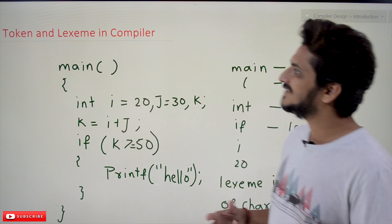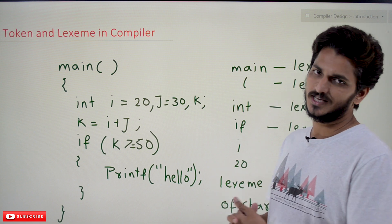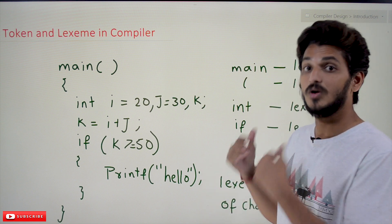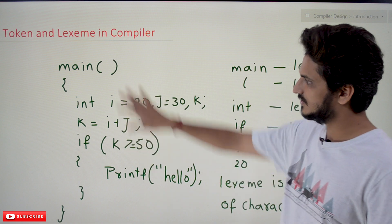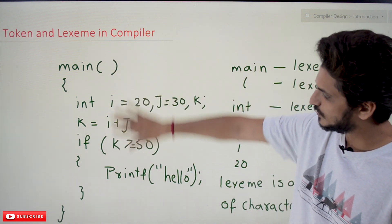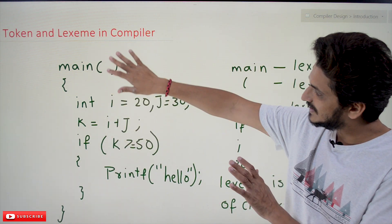Coming to today's class, we'll understand what's the difference between token and lexeme with the example which we already discussed in our previous class. This is the example we have taken. This is the source program taken as input to the lexical analysis phase.